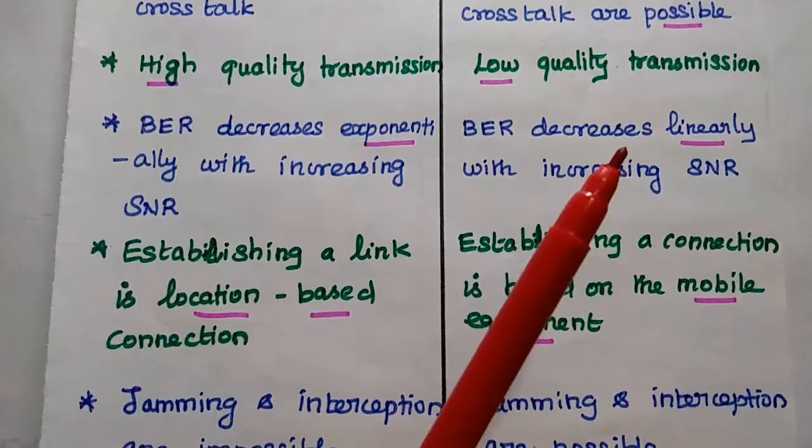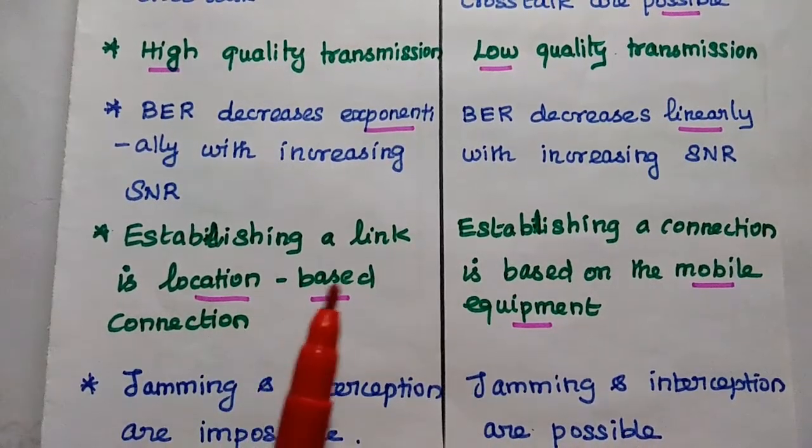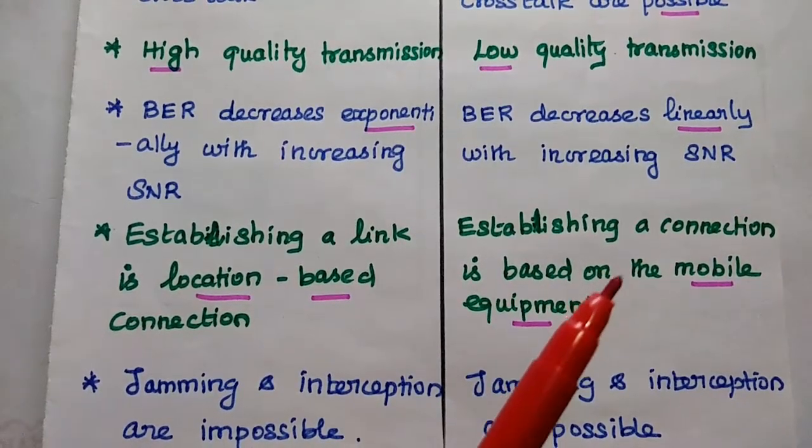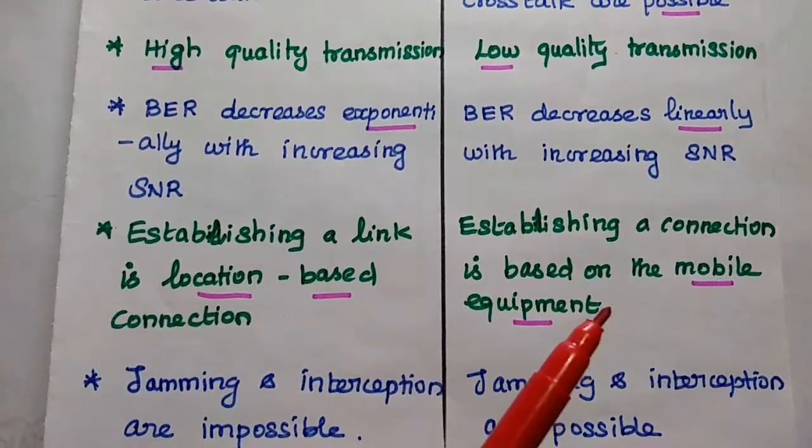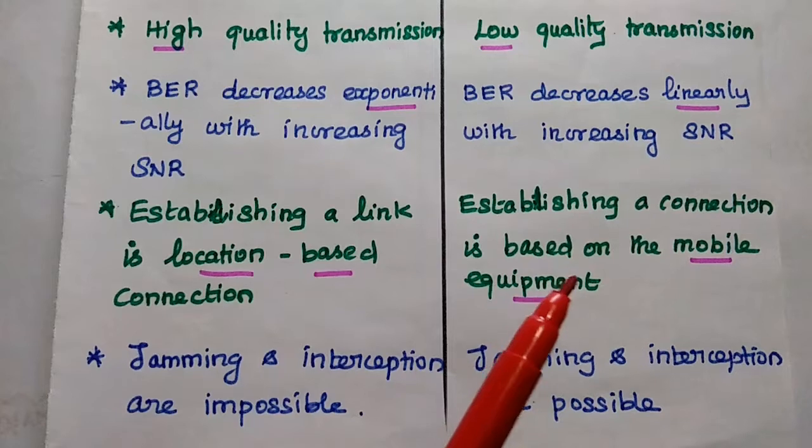Next, the establishment of the connection is based on the location of the user. But in wireless, establishing a connection is based on the mobile equipment because it is always moving around. Based on the mobile equipment, the connection is made.